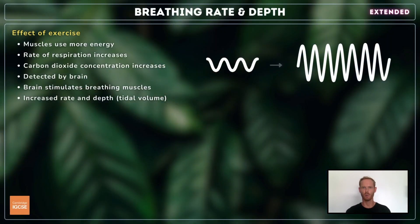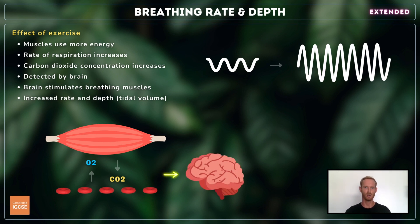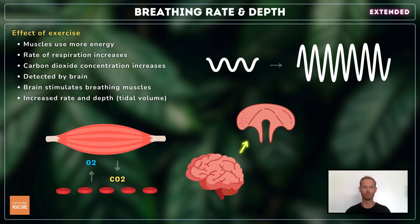When we exercise, both breathing rate and tidal volume increase to meet the higher demand for oxygen in the working muscles. As rate of respiration increases, carbon dioxide accumulates in the muscle cells and diffuses into the blood plasma more rapidly. The brain detects the rising carbon dioxide concentration in the blood and stimulates the breathing muscles to contract more rapidly and forcefully. This increases the rate of expiration of carbon dioxide and inspiration of oxygen.